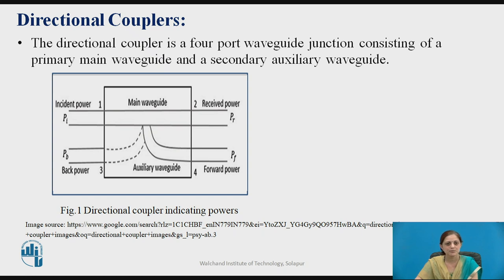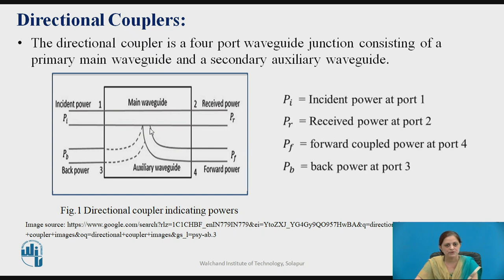The directional coupler has four ports with a waveguide junction consisting of the primary waveguide, or main waveguide, and the secondary auxiliary waveguide. From this figure you can observe that it has four ports: port 1, port 2, port 3, and port 4. At port 1, PI indicates incident power. At port 2, PR is the received power. PF is the forward coupled power at port 4, and PB is the back power at port 3.